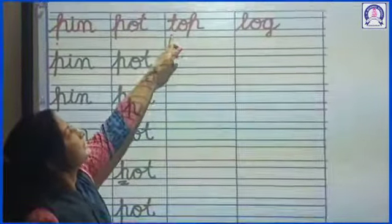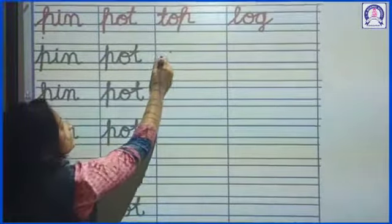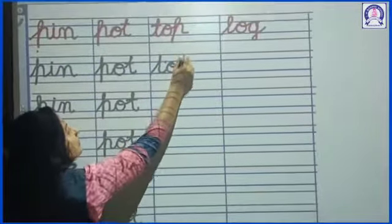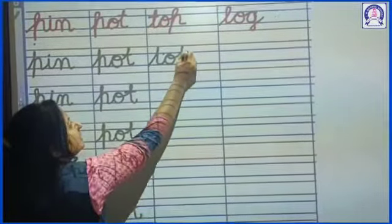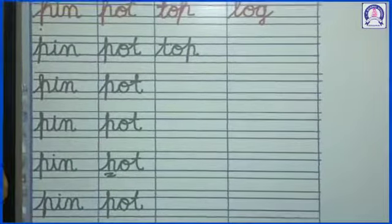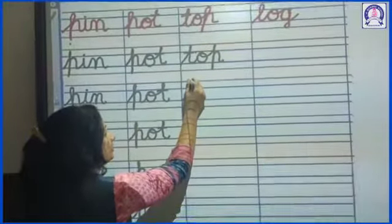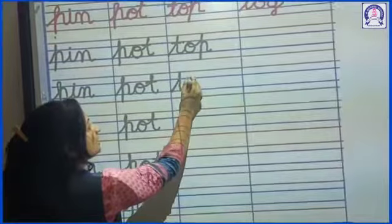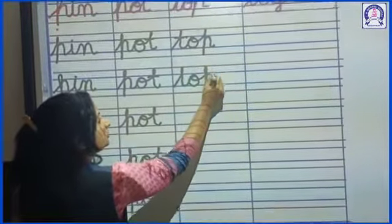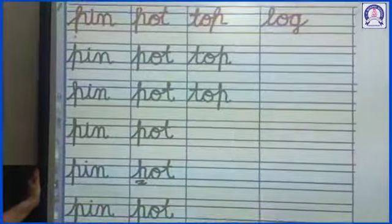Next is T-O-P top. T-O-P. T-O-P top. Spelling line karna nahin bolna hai. Madam ne blue line se corner se start kiya hai. Aapko bhi corner se hi start karna hai. Toh hi aapke sabhi spelling sequence mein aayenge. T-O-P top.